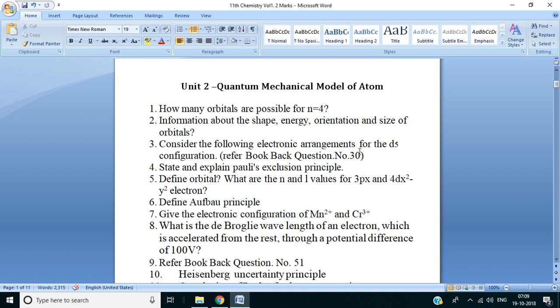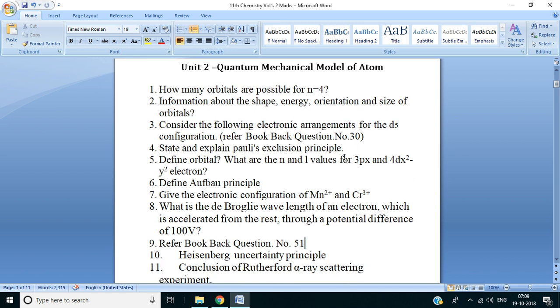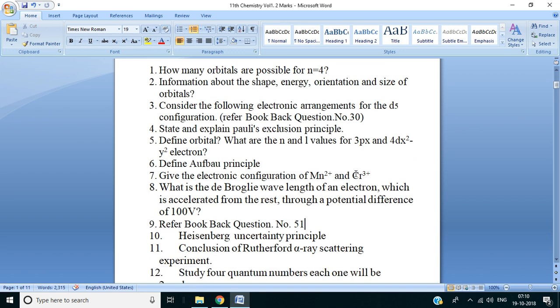3: Consider the following electronic arrangements for the d5 configuration (refer book back question number 30). 4: State and explain Pauli's exclusion principle. 5: Define orbital. What are the n and l values for 3px and dx²-y² electron? 6: Define Aufbau principle. 7: Give the electronic configuration of Mn²⁺ and Cr³⁺.